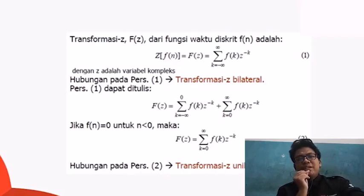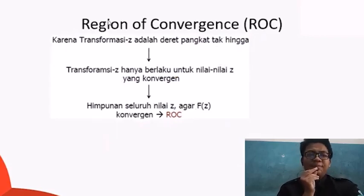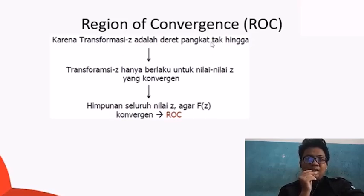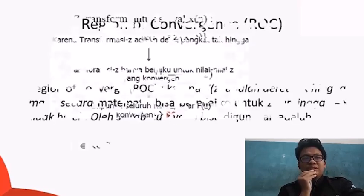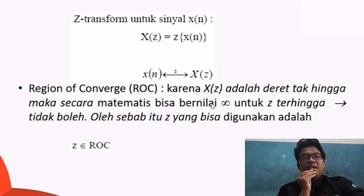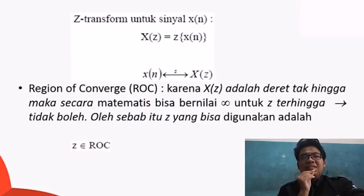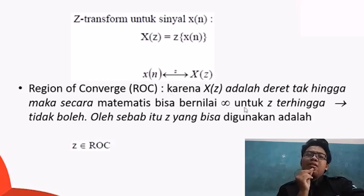Selanjutnya yaitu Region of Convergence atau ROC. Karena transformasi Z adalah deret pangkat tak hingga, maka transformasi Z hanya berlaku untuk nilai-nilai Z yang convergent. Dimana implikasinya seluruh nilai Z agar F(Z) convergent masuk ke dalam ROC. Transformasi Z sinyal X(N) adalah X(Z) yang merupakan deret tak hingga, sehingga secara otomatis bisa bernilai tak hingga untuk Z tertentu. Nilai Z yang digunakan adalah Z sama dengan ROC.